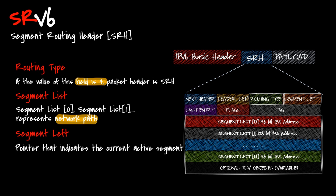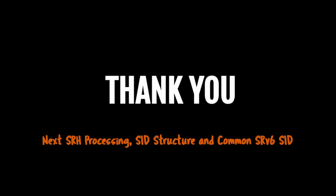This concludes the basics of SRv6 in part 1. We discussed why we need SRv6 over SRMPLS, the packet structure, the segment routing header, the extension header, and why SRv6 is called a native IPv6 technology. Thank you for watching. In our next video, we'll look at how segment routing header processing works, what the SID structure is, and what the common SRv6 behaviors are.